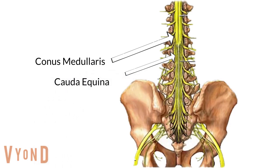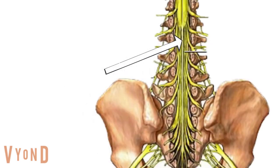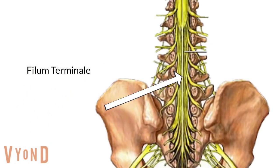Extending from the inferior portion of the spinal cord is a group of nerves called the cauda equina, which means horse's tail. The inferior portion of the spinal cord is anchored by a ligament called the filum terminale.